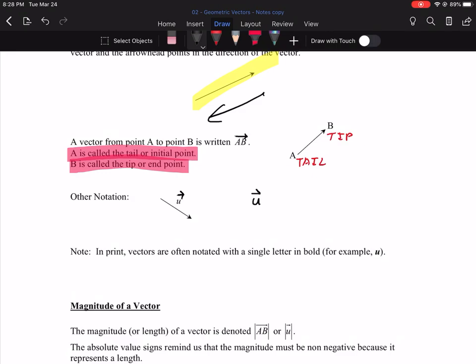Now, some textbooks instead will go bold. Some textbooks really bold the letter so that you can see it's a vector. But most of what you'll see, you'll see with the arrow notation.